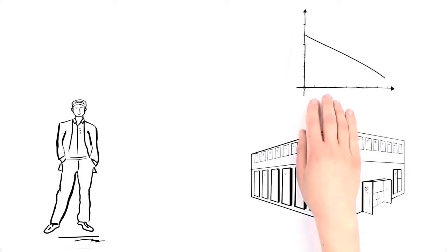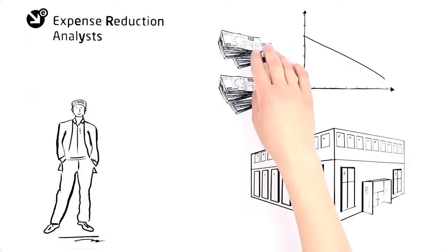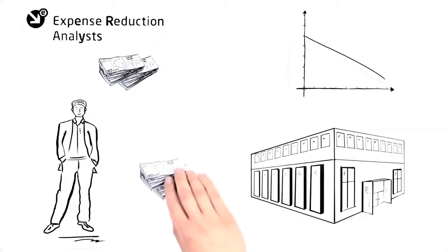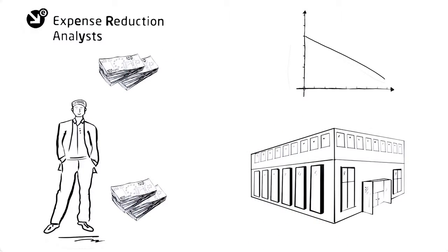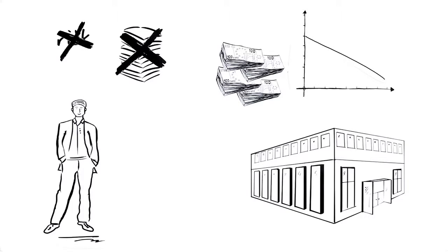Now John's company achieves double-digit savings on overhead costs. The savings made are then split between John and Paul. Therefore, John has cut the costs without much effort and risk, as Expense Reduction Analysts' remuneration is made on the basis of the savings actually achieved.